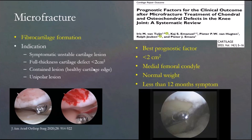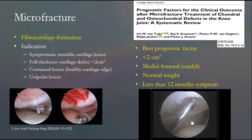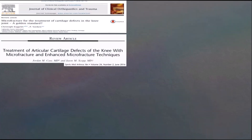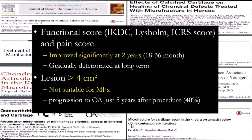Microfracture is good for small, contained lesions, but in bigger lesions the outcome is not so good. The limitation is two square centimeters — bigger than that, it's not good. We prefer micro drilling over tapping, because tapping can create a subchondral fracture. The outcome is improved with drilling, but in lesions bigger than four square centimeters it is not good, and there is progression of OA after five years.